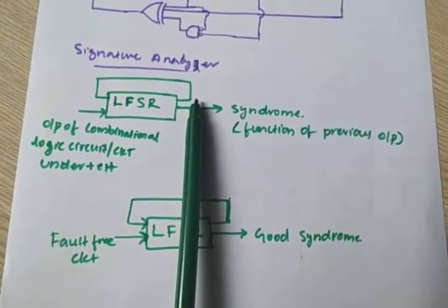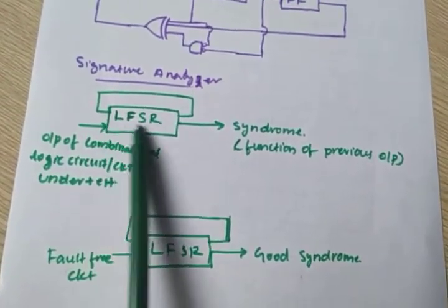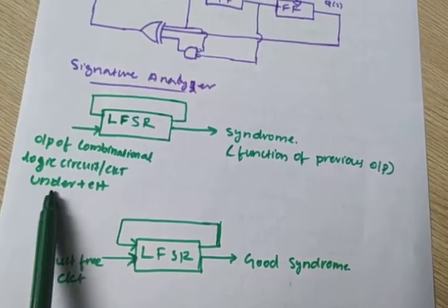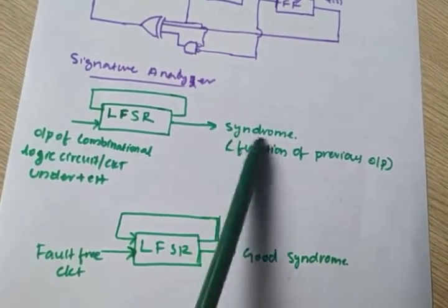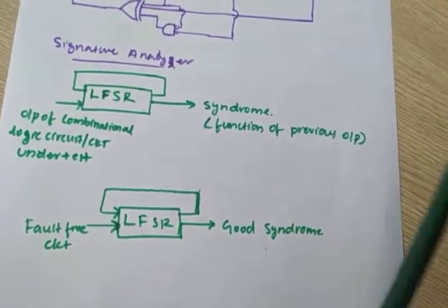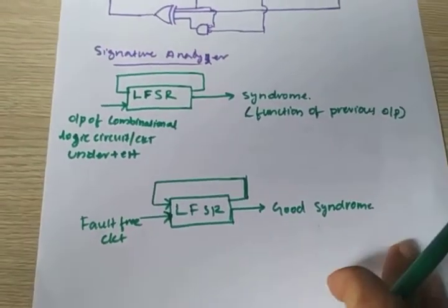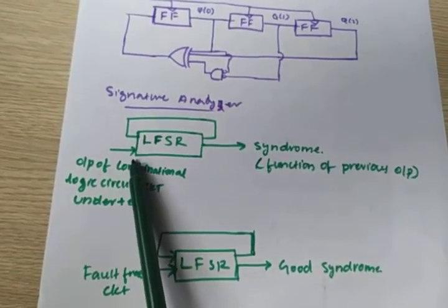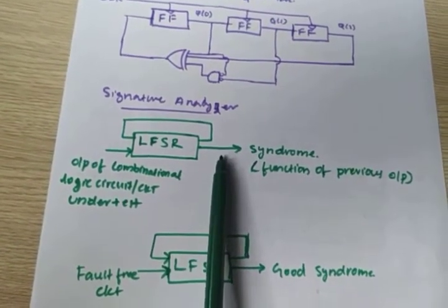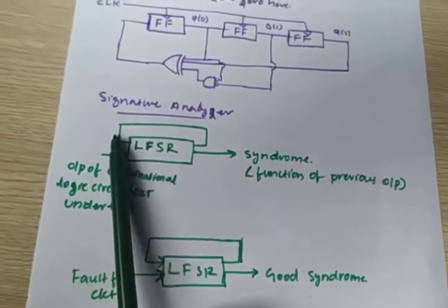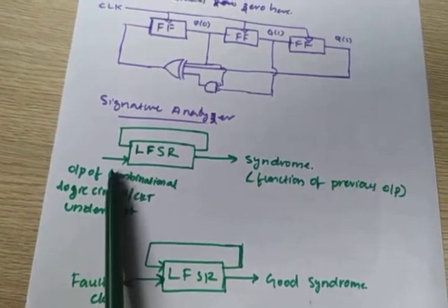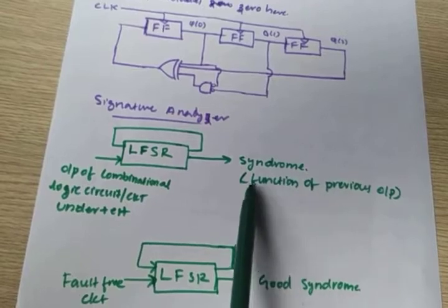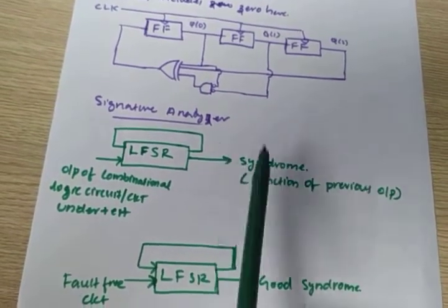This is the signature analyzer in built-in self-test. The LFSR is used for test pattern generation, and the output of the combinational logic circuit under test is called the syndrome. The syndrome is a function of the previous output — each output is fed back and compared with the next input from the circuit under test.